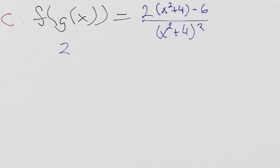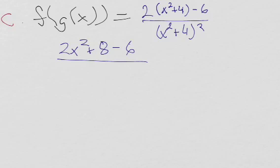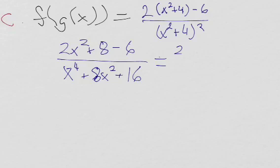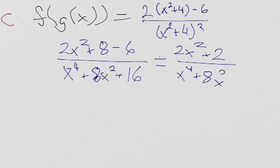Now if we distribute that 2, we get 2x squared plus 8 minus 6 on top. For the denominator, foiling out x squared plus 4 squared gives us x to the fourth plus 8x squared plus 16. The plus 8 minus 6 on top simplifies, so the final answer is 2x squared plus 2 over x to the fourth plus 8x squared plus 16.